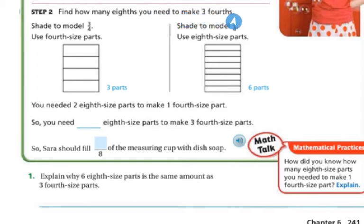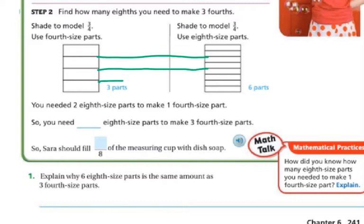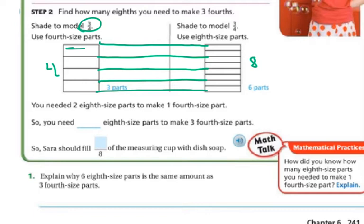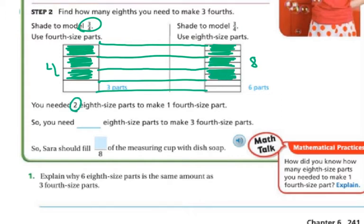Find how many 8ths you need to make 3/4. I'm going to shade my model — remember, these are the same exact size, only this one is broken into 8ths and this one is broken into 4ths. See how it's 2 eighths for each fourth? I'm just showing you that this is the same. If I'm shading my model for 3/4: 1, 2, 3 fourths. Now I'm going to shade the 3 fourths into the 8ths parts: 1 fourth, 2, and 3. So I need 1, 2, 3, 4, 5, 6 eighths to make 3 fourths.